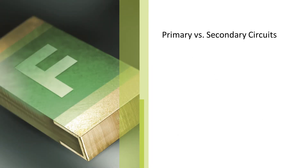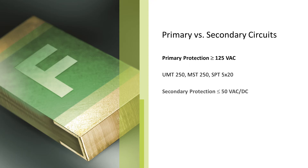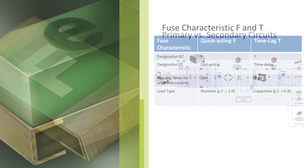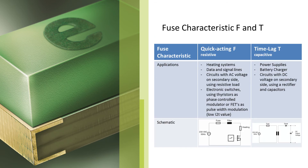Schurter is specialized in non-resetable fuses for primary protection of typically 250V AC, and also for non-resetable fuses for secondary protection of up to 50V AC or DC. Non-resetable fuses are available in different characteristics. Quick-acting fuses open very quickly in the event of a short circuit. They are often used for resistive load types with a power factor of around 1. Typical applications are heating systems, data and signal lines, or applications with a pulse load.